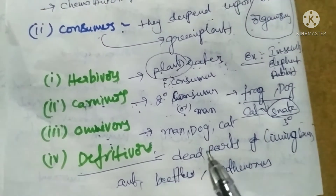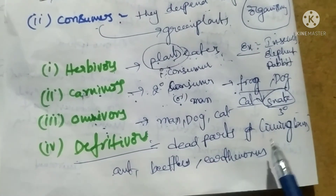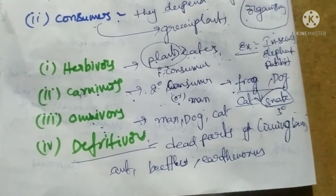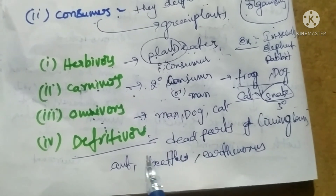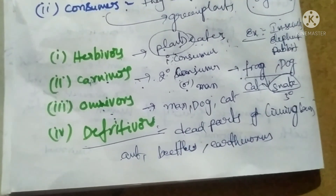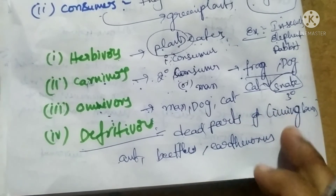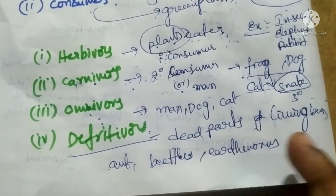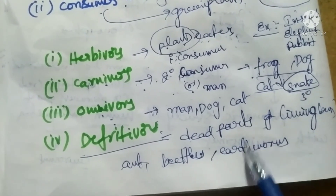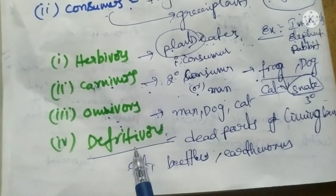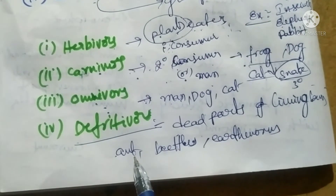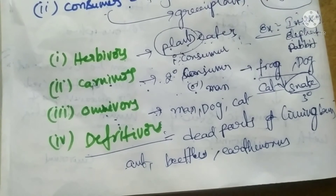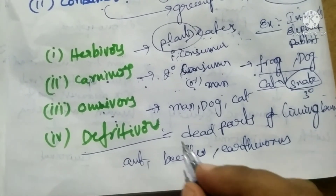Detritivores feed on the dead parts of organisms, wastes of living organisms, and partially decomposed matter. Examples include beetles, earthworms, and butterflies.